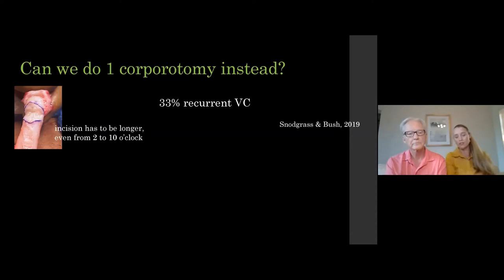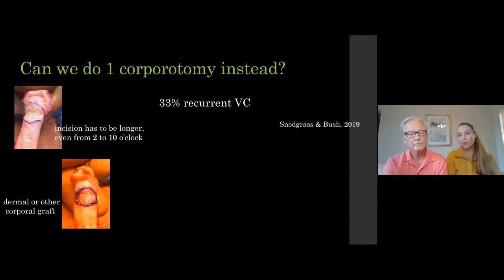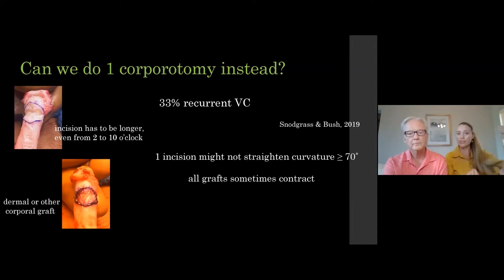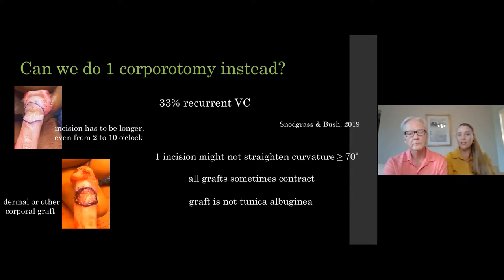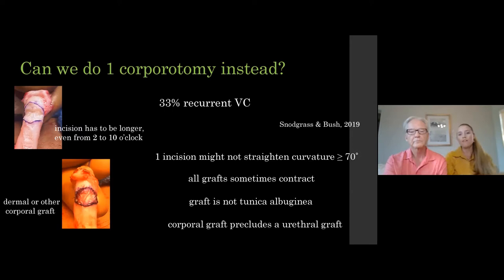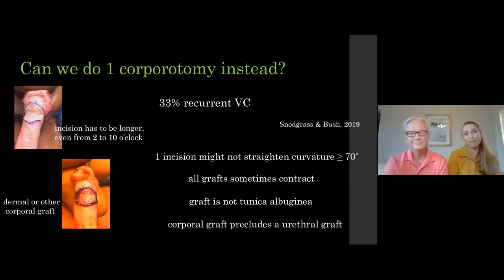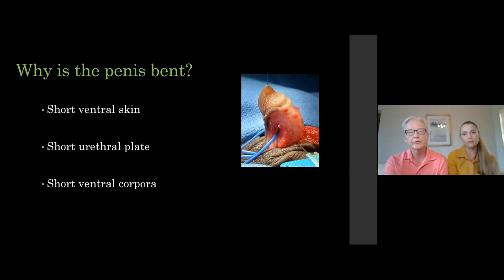Why can't we just do one corporotomy? We see recurrent curvature even with a single ventral corporotomy, especially for higher degrees of curvature — we're asking too much of one little incision instead of spacing it out over three, where the body can fill them in. With one incision, people usually make it wider — almost unhinging the penis — and then place a graft. All grafts have some degree of contracture, around 5-7%. You can't place a urethral graft on top of a corporal graft. One corporotomy has a one-third recurrence rate; we have less than 2%.